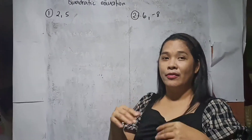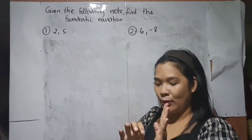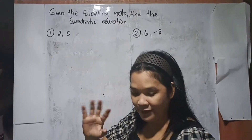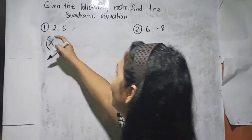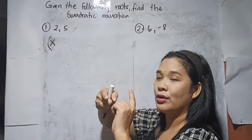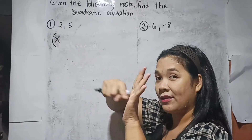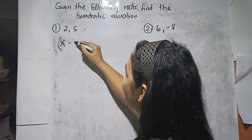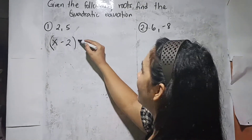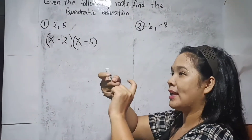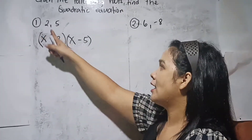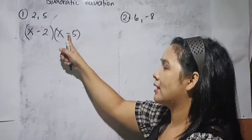Now, we are given the following roots and we are going to change them into a quadratic equation. The roots are 2 and 5. So, these become x — then we replace the signs. So this becomes x minus 2, and this one becomes x minus 5. If you observe, I changed the signs: this one is negative 2 and this one is negative 5.